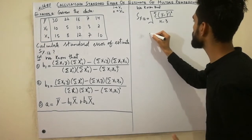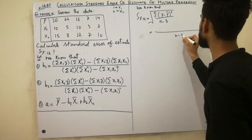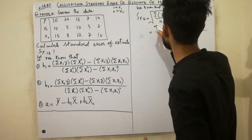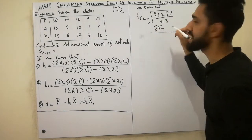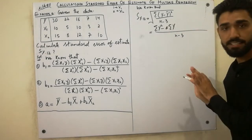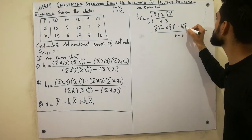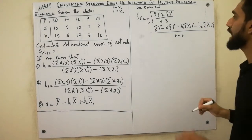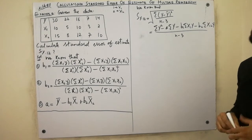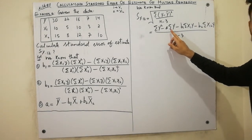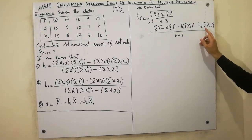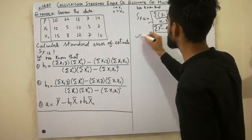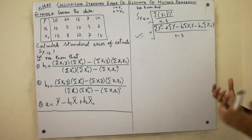The summation of (y minus y-hat) squared may be written as: summation y² minus a·summation y minus b1·summation x1y minus b2·summation x2y. So the standard error of estimate is the square root of that expression divided by n minus 3. That's the formula we have to use.